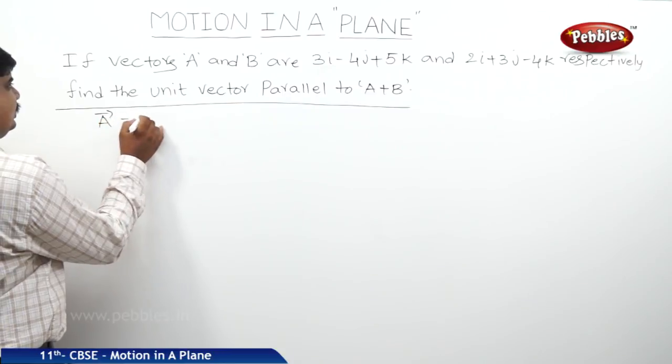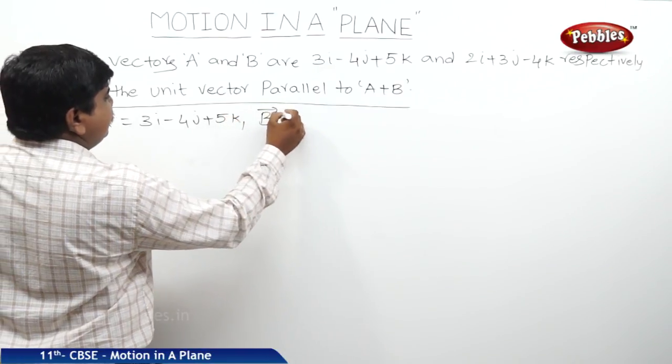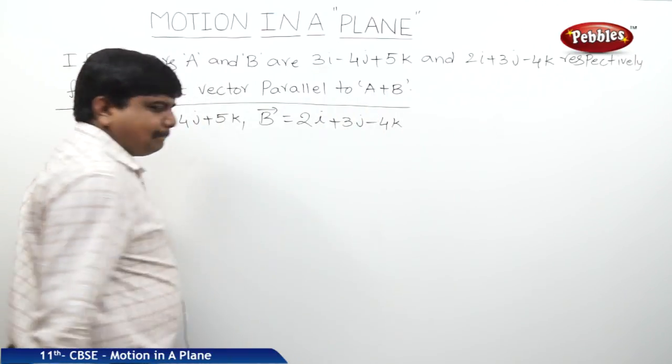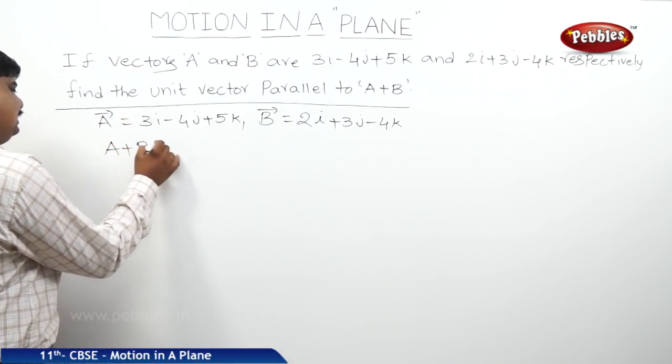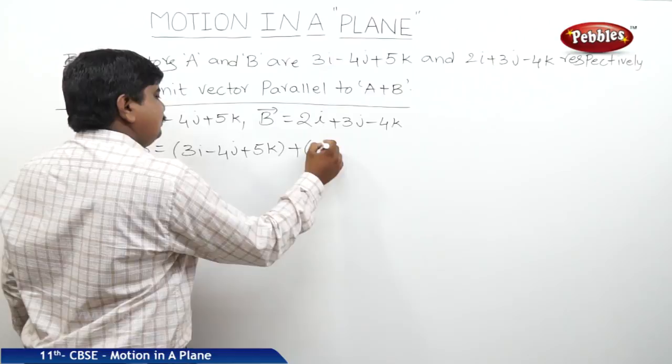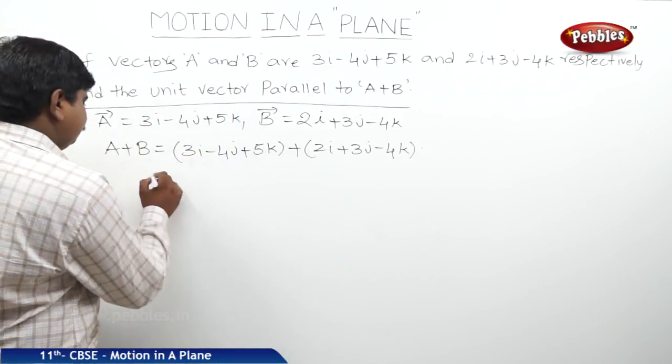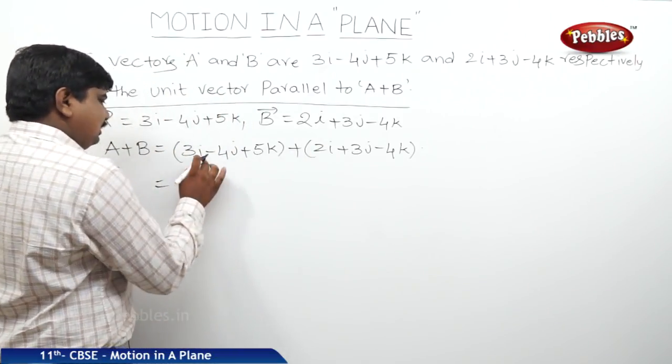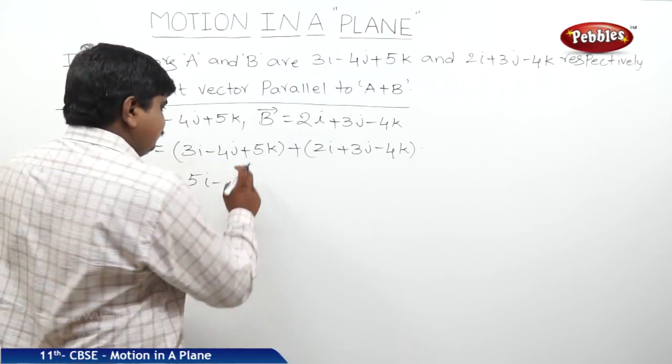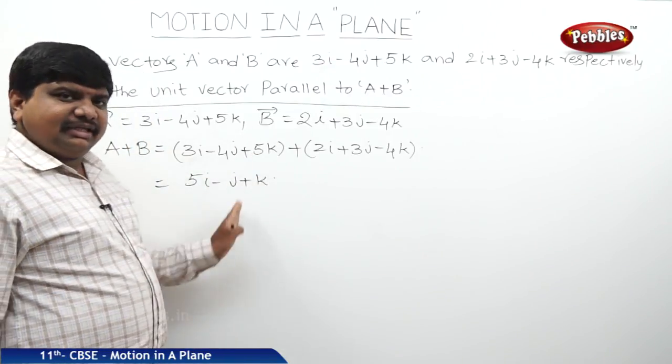Where a bar is 3i minus 4j plus 5k, where b bar is 2i plus 3j minus 4k. Therefore, a plus b is equal to 3i minus 4j plus 5k plus 2i plus 3j minus 4k. This 3i plus 2i where i is common, we can say that 3 plus 2, 5i minus j because minus 4 minus 1 is minus 1, 5k minus 4k is plus k. This is the resultant of the a and b vectors.